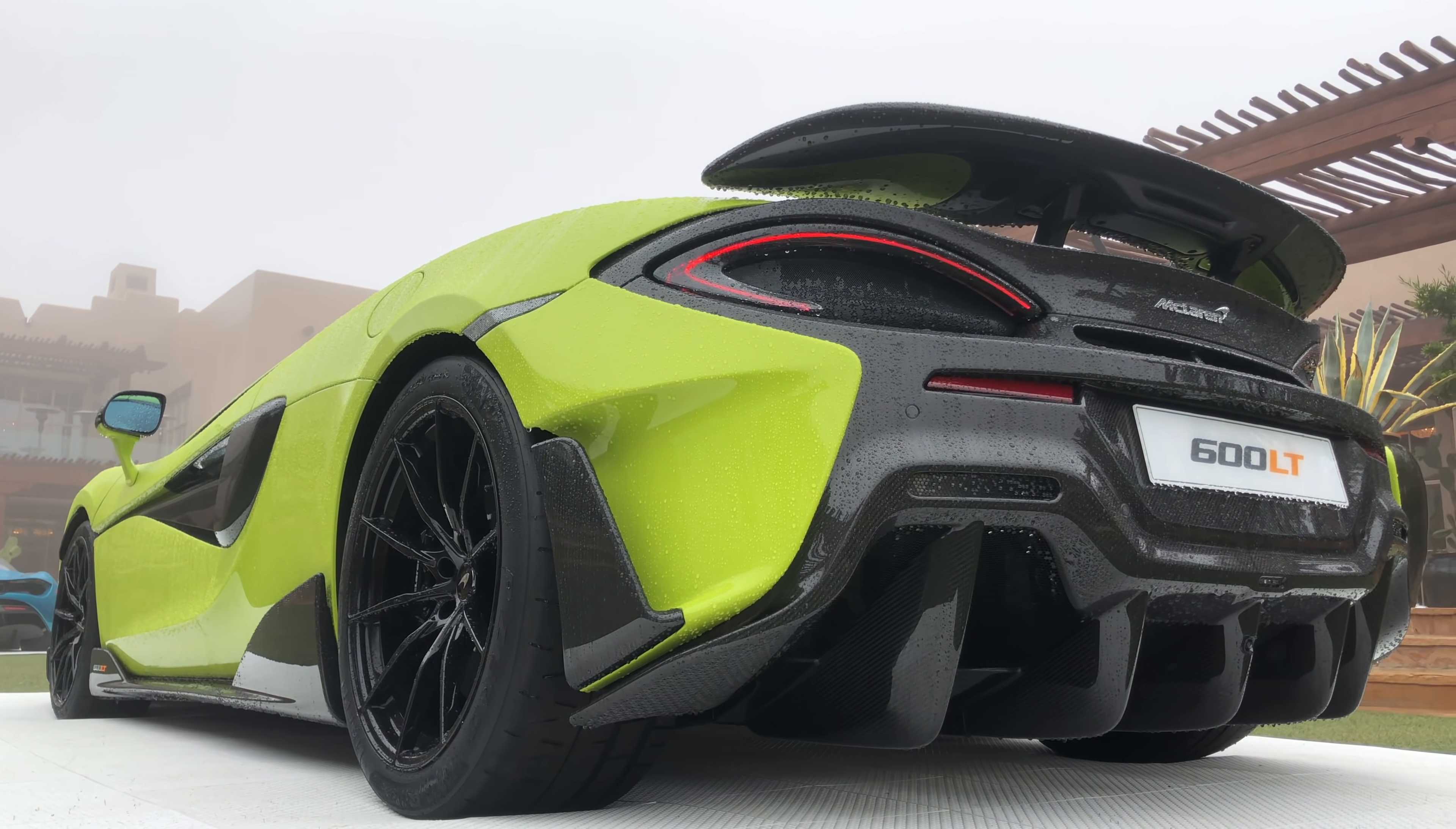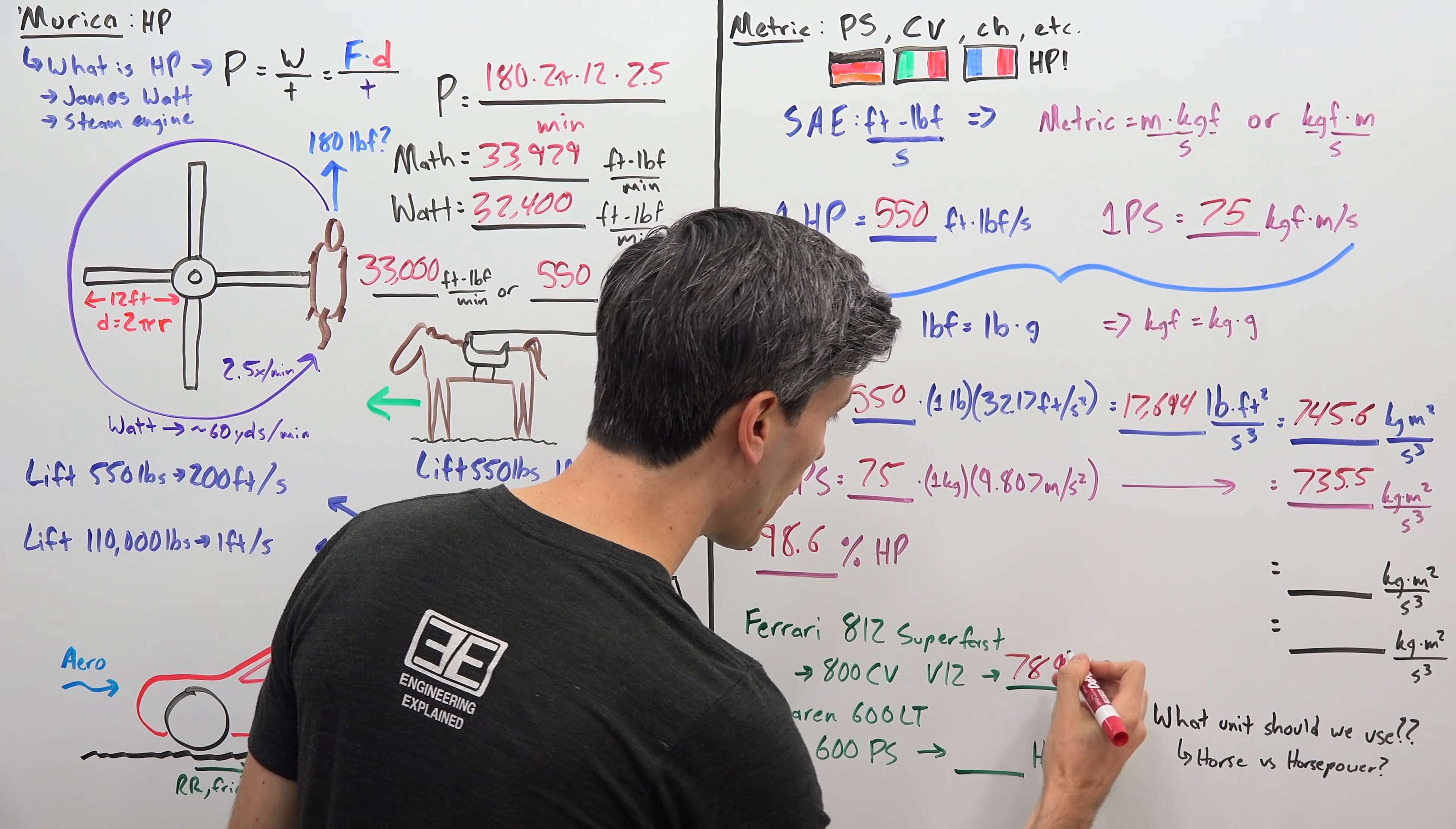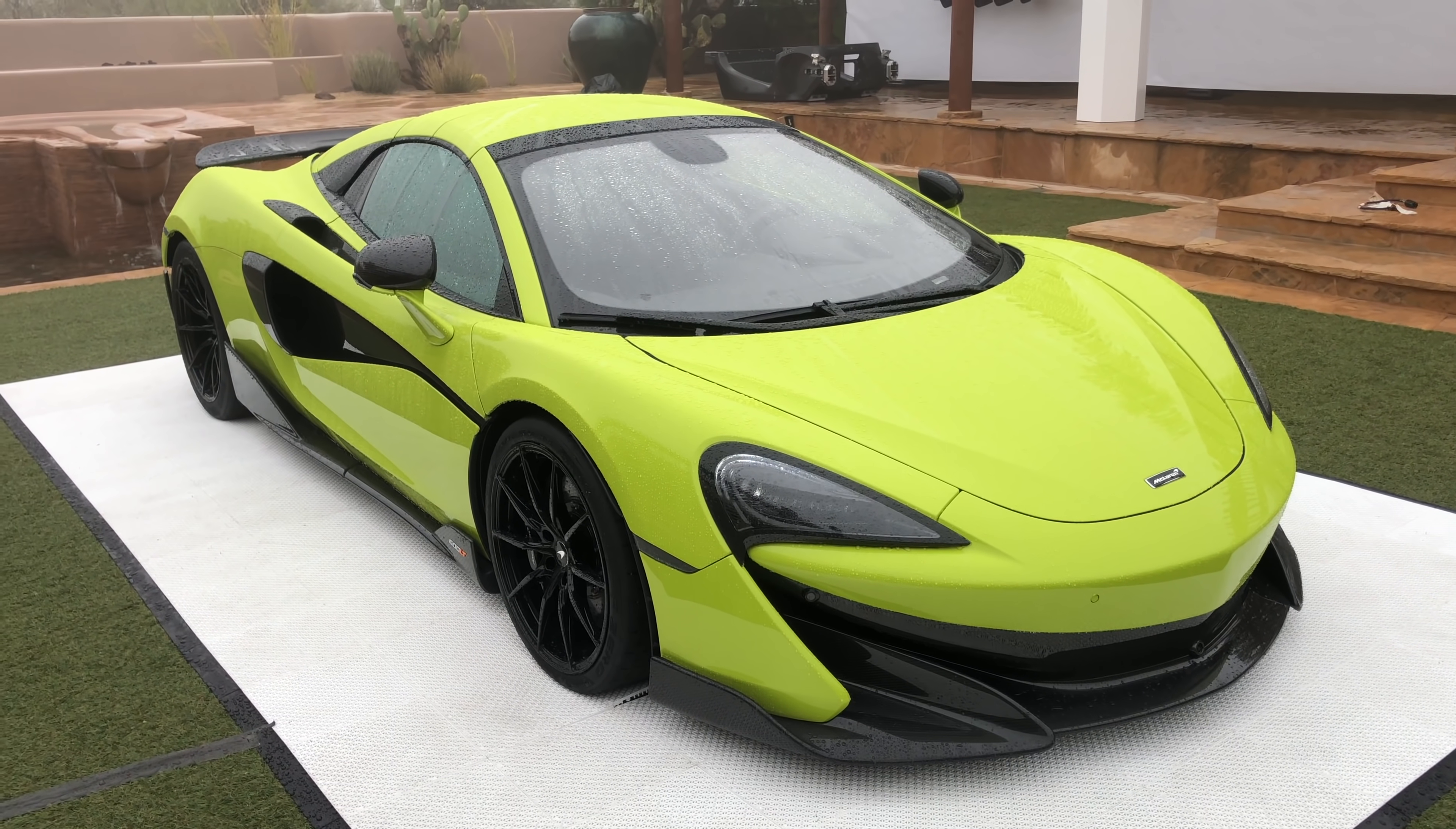So that is why you will see cars have a different horsepower rating in Europe versus in the US. So for example a Ferrari 812 Superfast. Its name actually gives some hints about it so the 8 standing for 800 CV and the 12 standing for a V12 but that 800 CV or metric horsepower is equivalent to just 789 horsepower which is what you'll see it rated as in the United States. Same engine same horsepower just the different unit being used. McLaren 600 LT, the 600 standing for 600 metric horsepower but in the US that is 592 horsepower. So again same car but using different units when discussing horsepower.